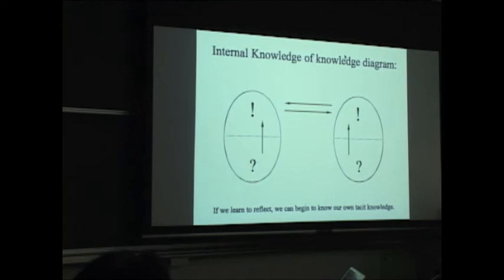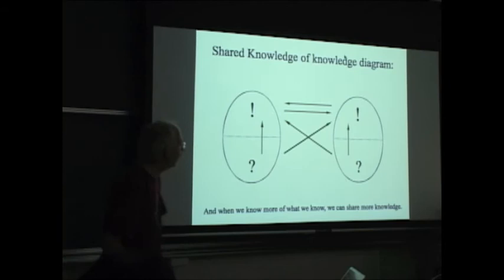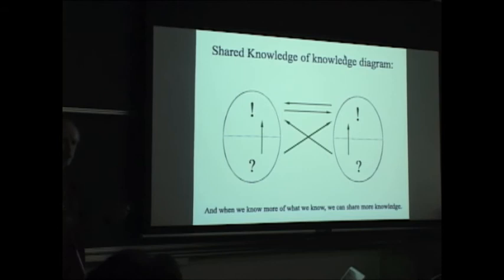And what we need to learn, before we can do interdisciplinary collaboration, we have to first learn to reflect. Then, if we learn to reflect, we can begin to know our own tacit knowledge. If we not only use our knowledge, but actually know it, then we can have better communication with other people. And then, in principle, we can share the knowledge of knowledge. If we know our own knowledge, then we can also explain it to other people, and also from the other side. When we know more of what we know, we can share more knowledge. It is very simple, but generally, it is not done. Generally, people come together, and they share their explicit knowledge. And then, they are surprised they cannot collaborate.